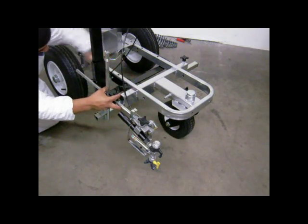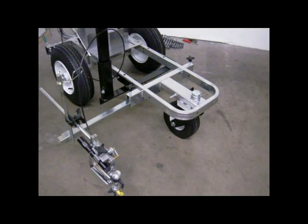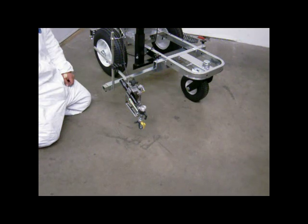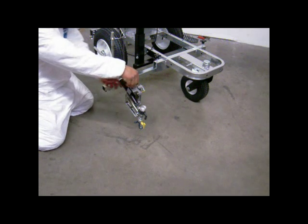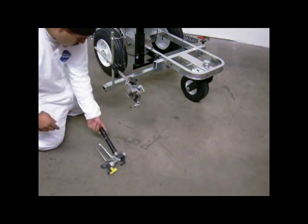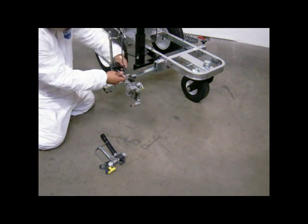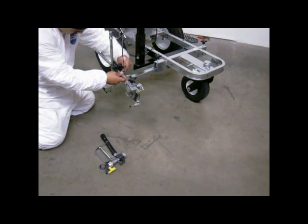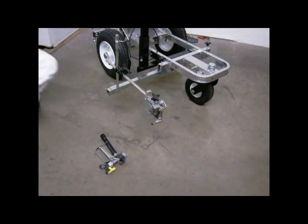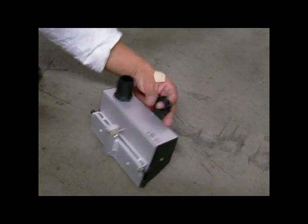Reposition and secure the horizontal gun arm support to the outside position as it would be when striping. Remove the paint gun from the gun holder and set it to one side. Loosen the clamp on the horizontal gun arm support and slide the gun bar all the way forward to make room for installation of the bead dispenser.